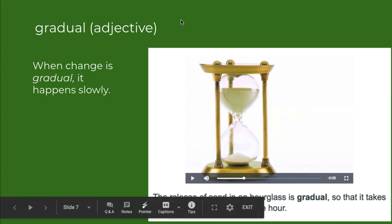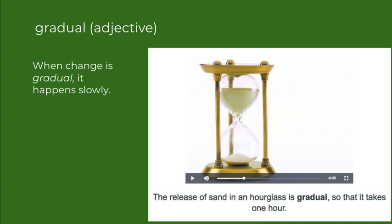The next word is gradual. It's an adjective, so it describes something. When a change is gradual, it happens slowly. Our sentence for this picture is: the release of sand in an hourglass is gradual so that it takes one hour. Sometimes you can find ones that are even slower or faster.